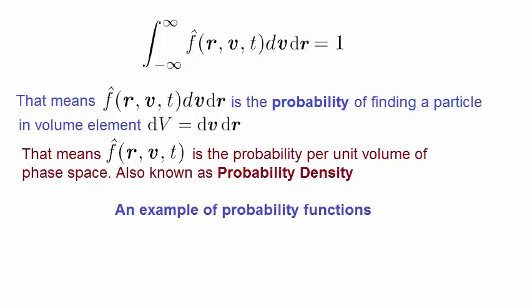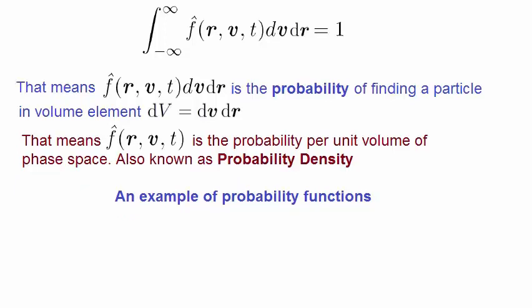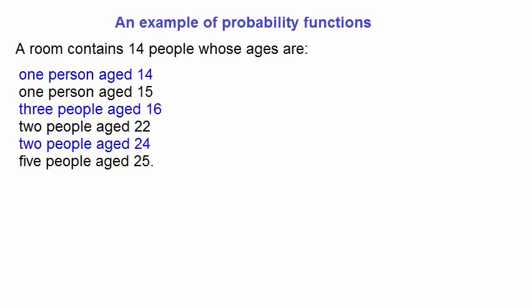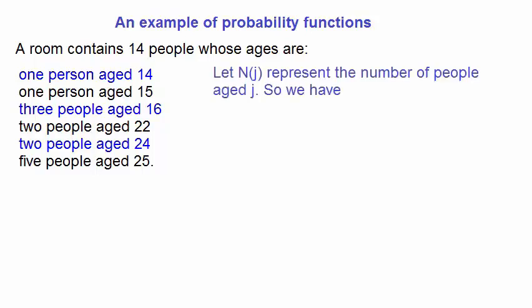Let's look at an example of probability functions that are nothing to do with plasma physics, just to make it more accessible. Imagine that a room contains 14 people, whose ages are as follows. That is, one person is aged 14, one person 15, three people are 16, two people are 22, two people are 24, and finally, five people are 25 years of age. We can also generalize the number of people with a certain age in this way. n as a function of j means the number of people with age j. We can explicitly write this as follows.